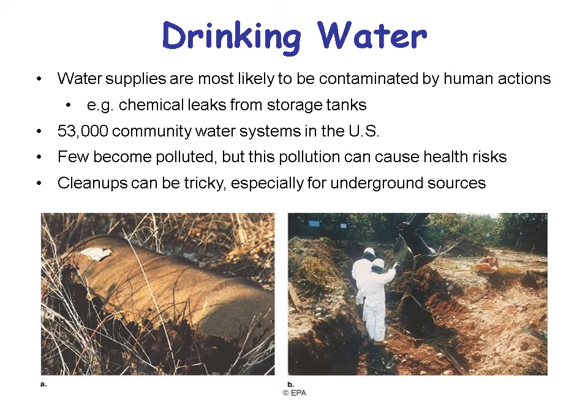As we know from the last lecture, lakes, streams, and rivers get much of their water from groundwater, so you can't separate one from the other. One of the problems we have worldwide is that water supplies get contaminated by humans. The U.S. has 53,000 community water systems, and some of those get polluted.